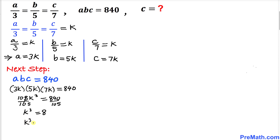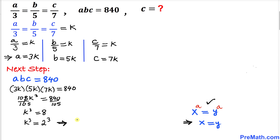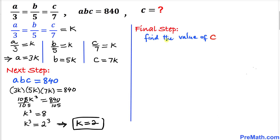k cubed equals 8, which can be written as 2 cubed. Using this well-known fact, k cubed equals 2 cubed gives us simply k equals 2.